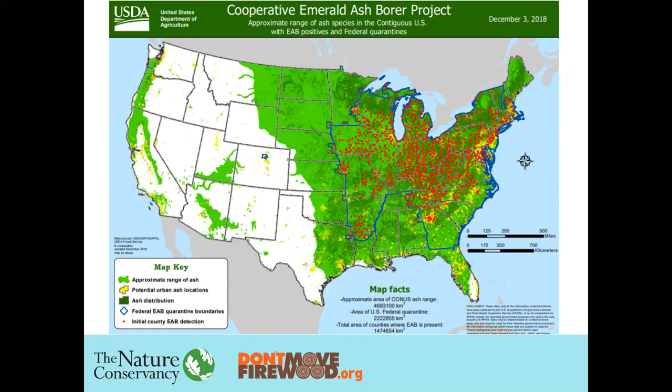This also does not include all of the emerald ash borer locations found in Canada. You're not allowed to move hardwood firewood out of the blue zone into the other zones. You can see the other zones have both natively occurring ash — the green mapping — and also urban plantings of ash shown as yellow blotches. Anything that comes out of the blue zone into the other area is a threat to that area. You're not allowed to move firewood out of that region.